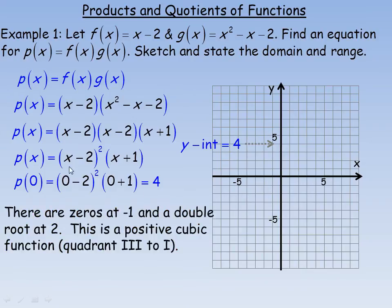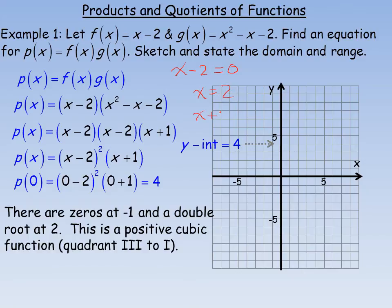Setting each factor equal to zero: x minus 2 equals 0 gives x equals 2, and x plus 1 equals 0 gives x equals negative 1. So negative 1 and 2 are the zeros of the function, and the graph crosses the x-axis at negative 1 and positive 2.